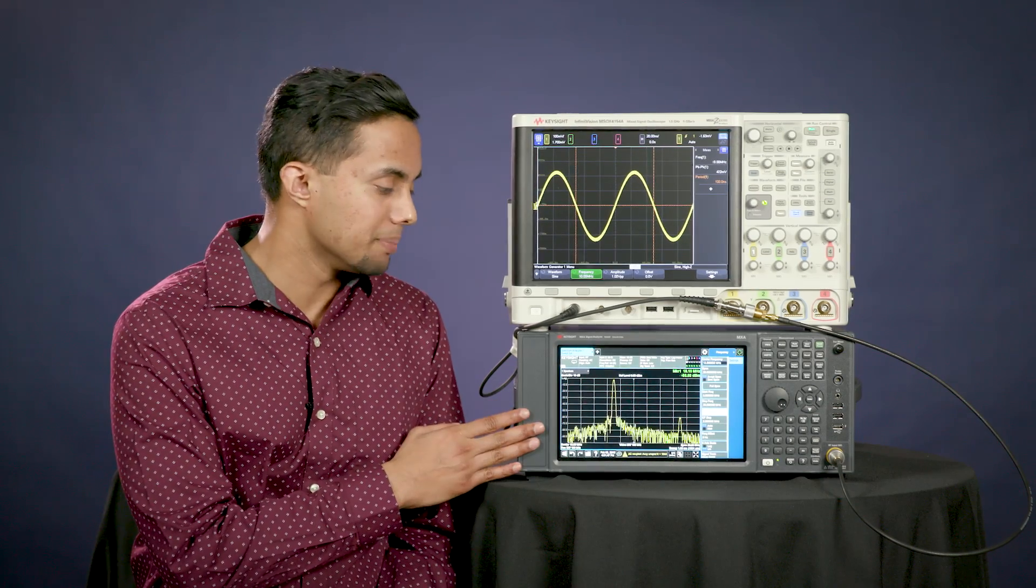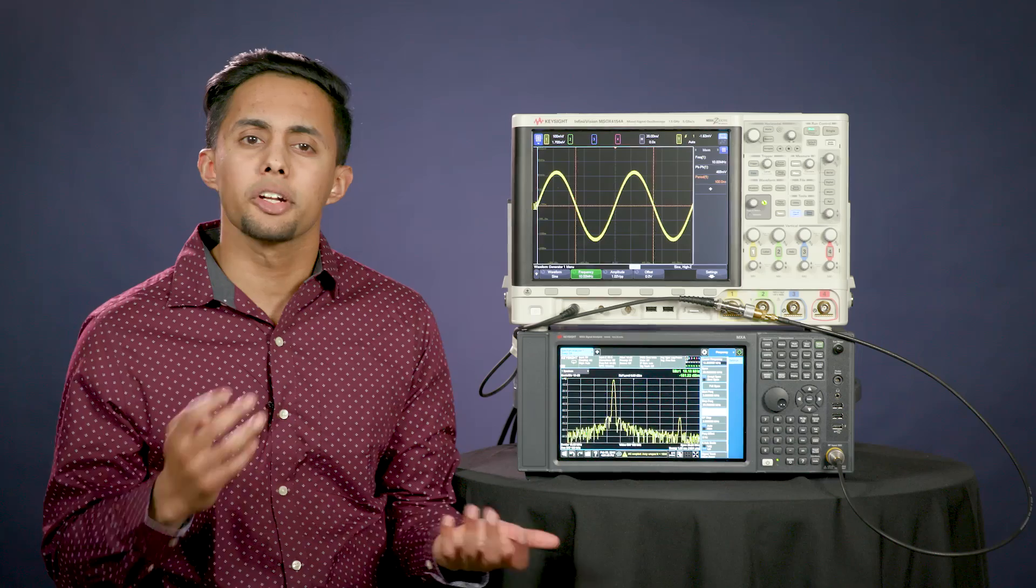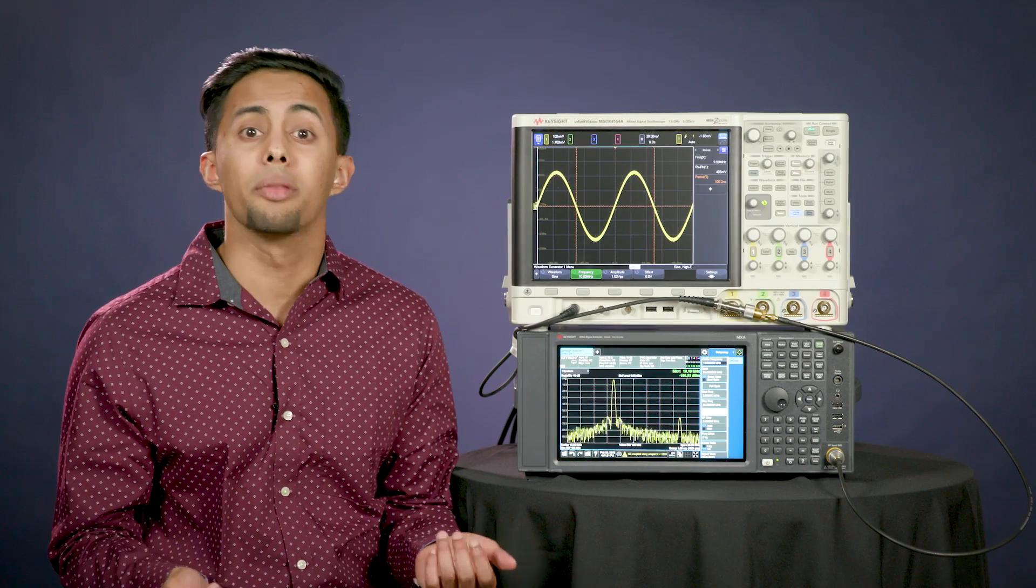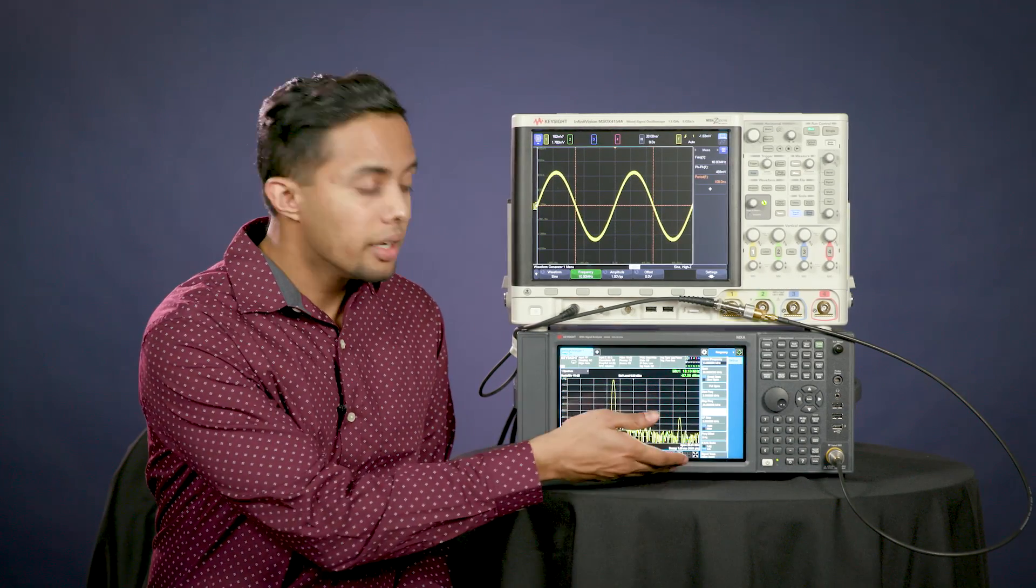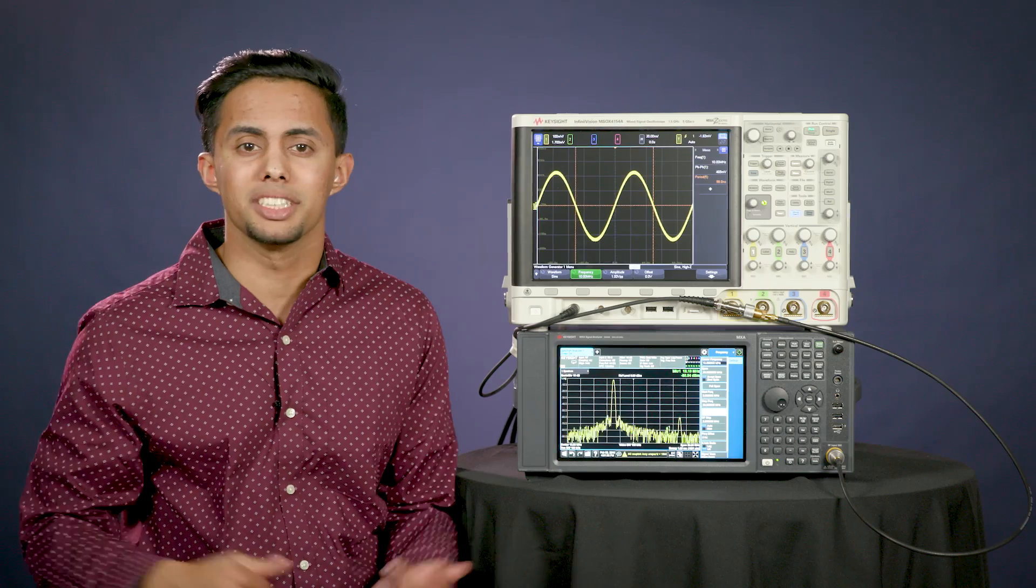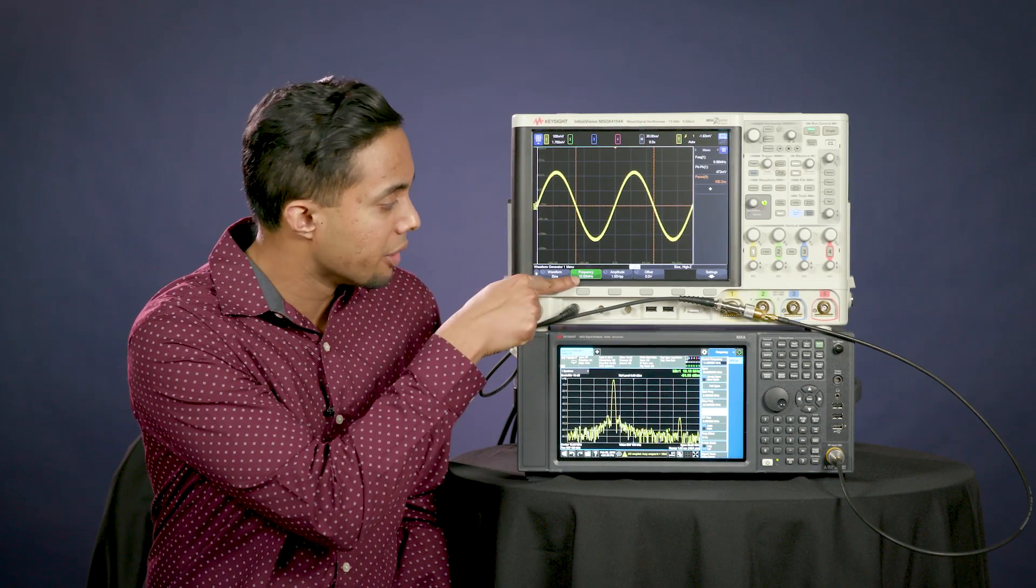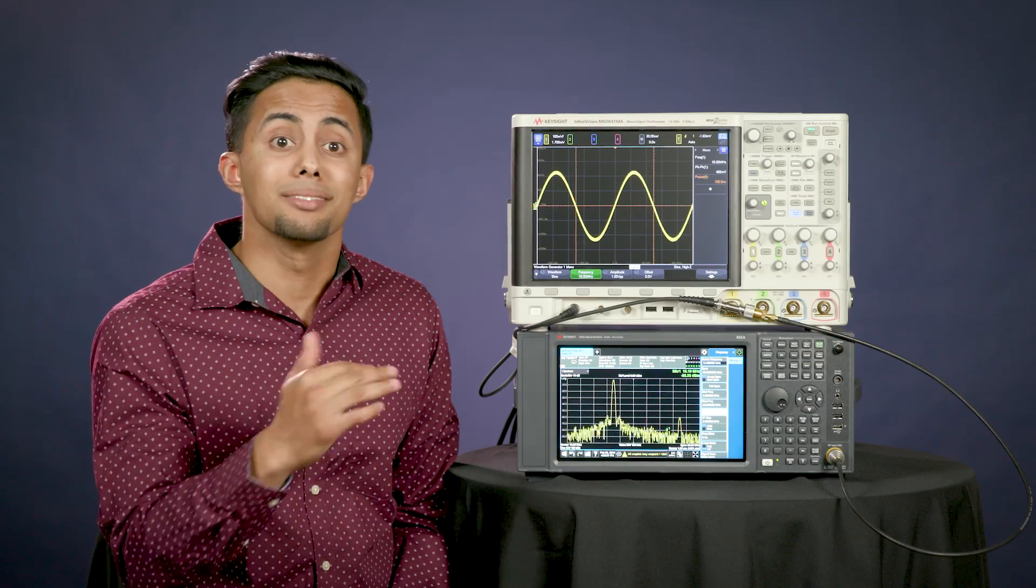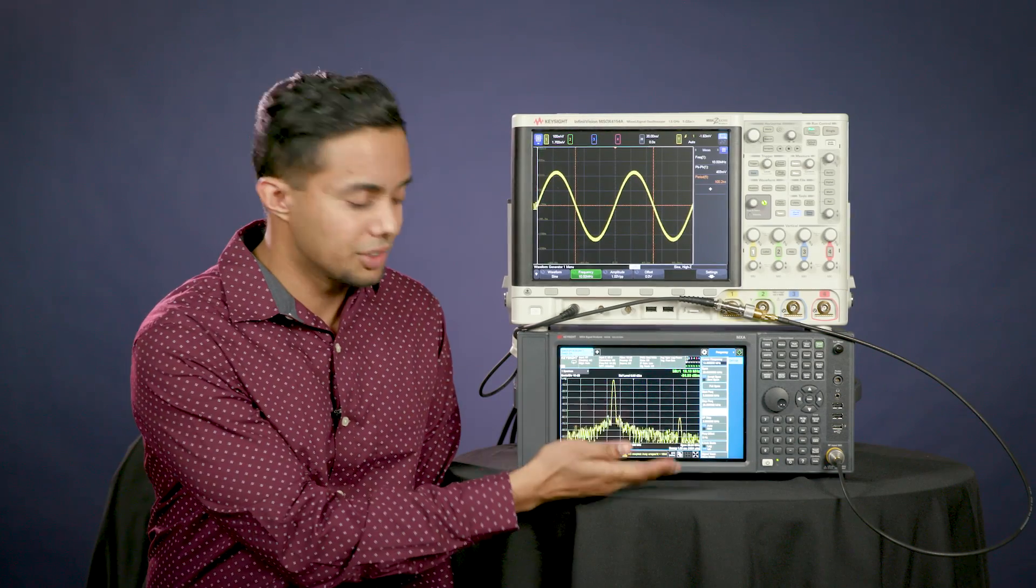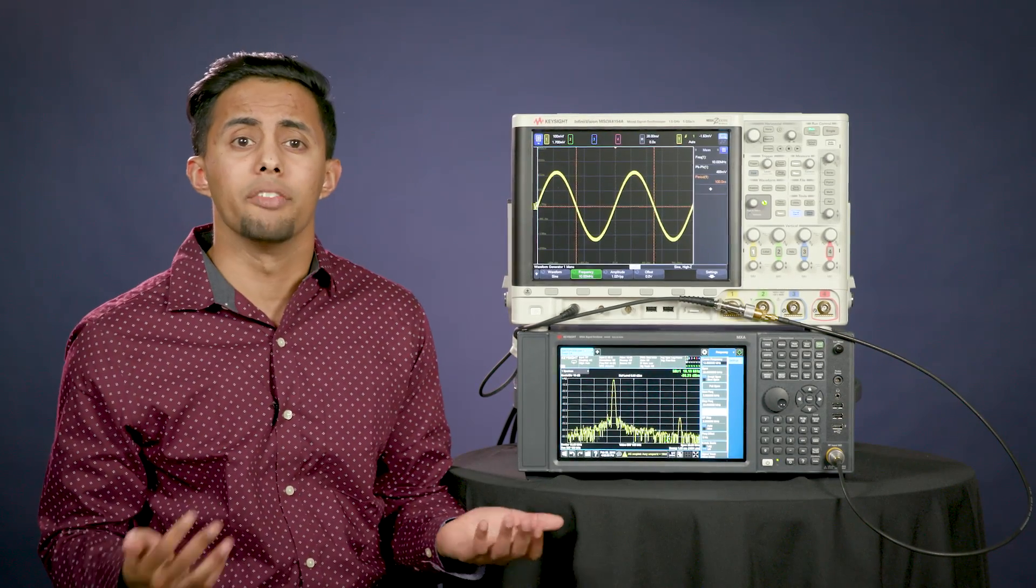All right so now we have the signal analyzer and as you may remember signal analyzers display signals with respect to frequency versus amplitude or the frequency domain. If we were to output the same 10 megahertz signal from the waveform generator that we had seen earlier on the oscilloscope to the analyzer, this is how it would appear visually.